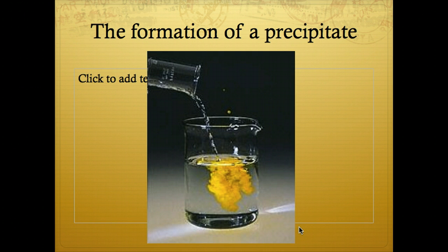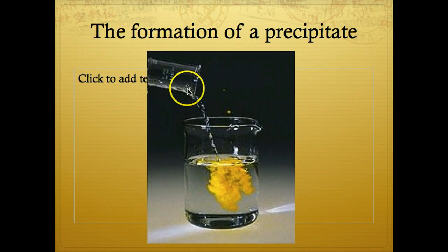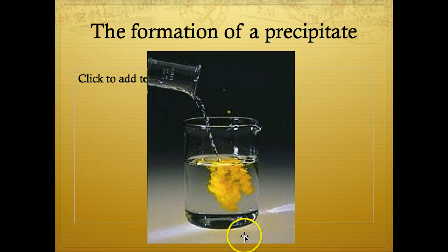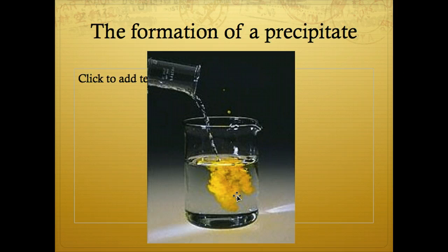A precipitate is a solid that is formed when you mix two solutions. You assume that the solid represents a new substance; if this is so, a chemical reaction may have occurred. See this liquid here in the burette being poured into the beaker and forming this yellow precipitate — when we pour these two solutions together, you can see the formation of a solid precipitate.